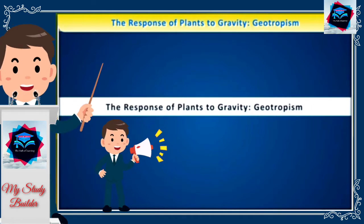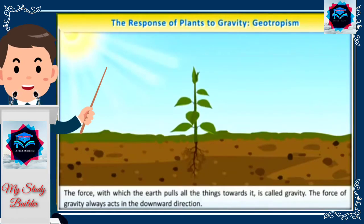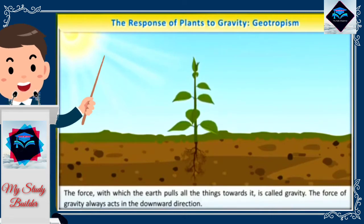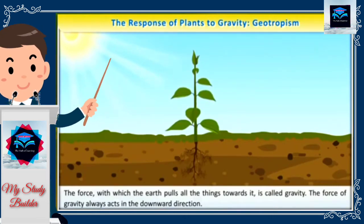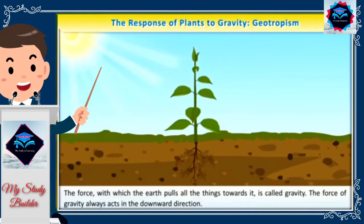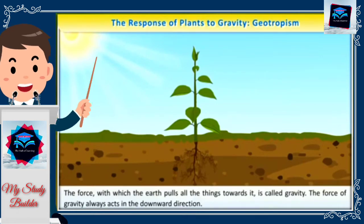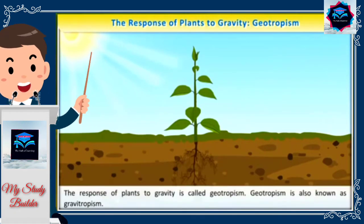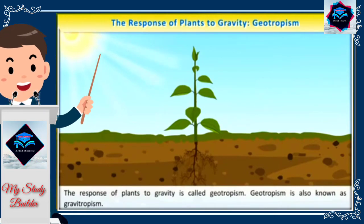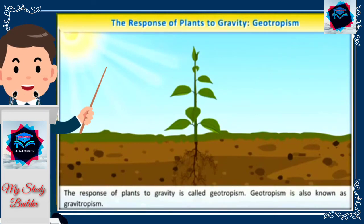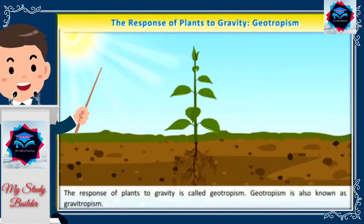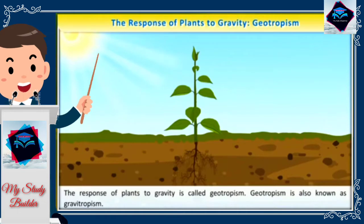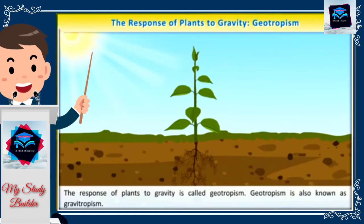The response of plants to gravity is called geotropism. The force with which the earth pulls all things towards it is called gravity, and it always acts in the downward direction. The response of plants to gravity is called geotropism, also known as gravitropism.